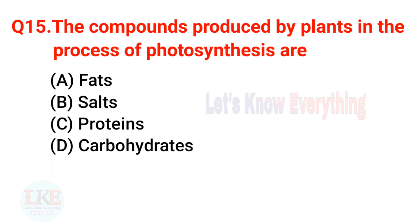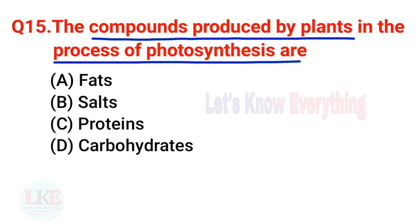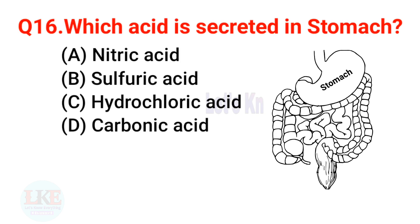Question 15: The compounds produced by plants in the process of photosynthesis are carbohydrates.